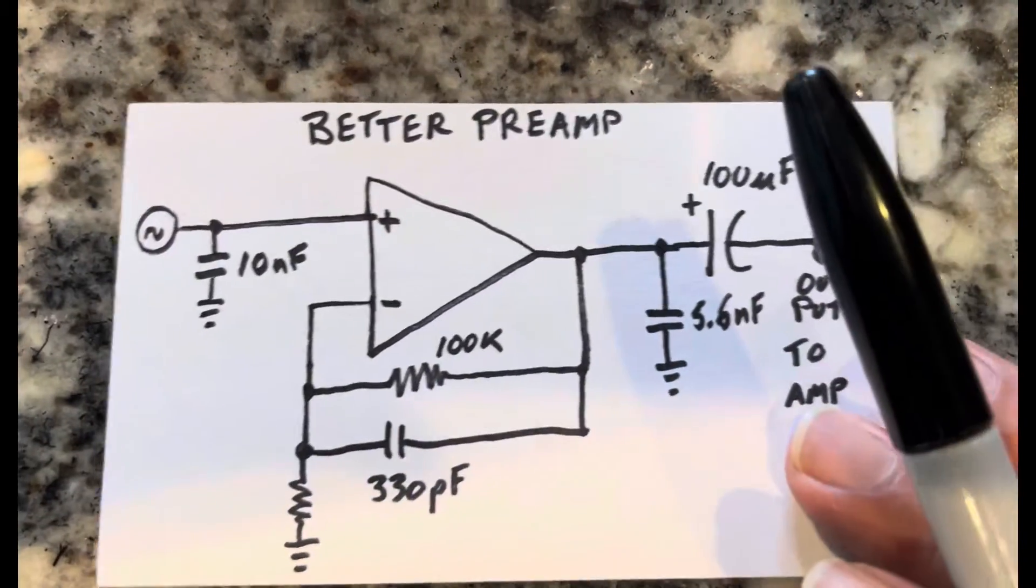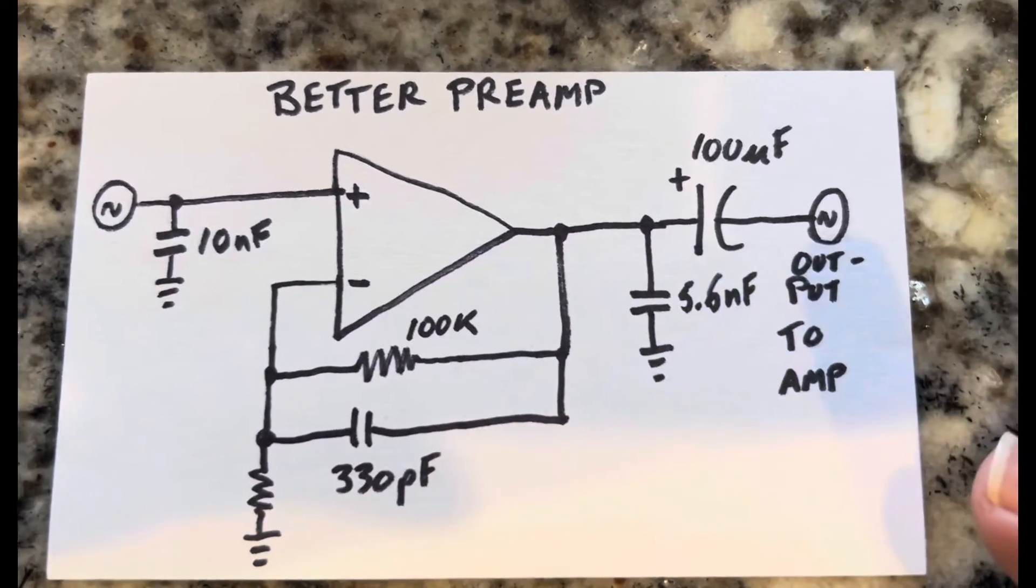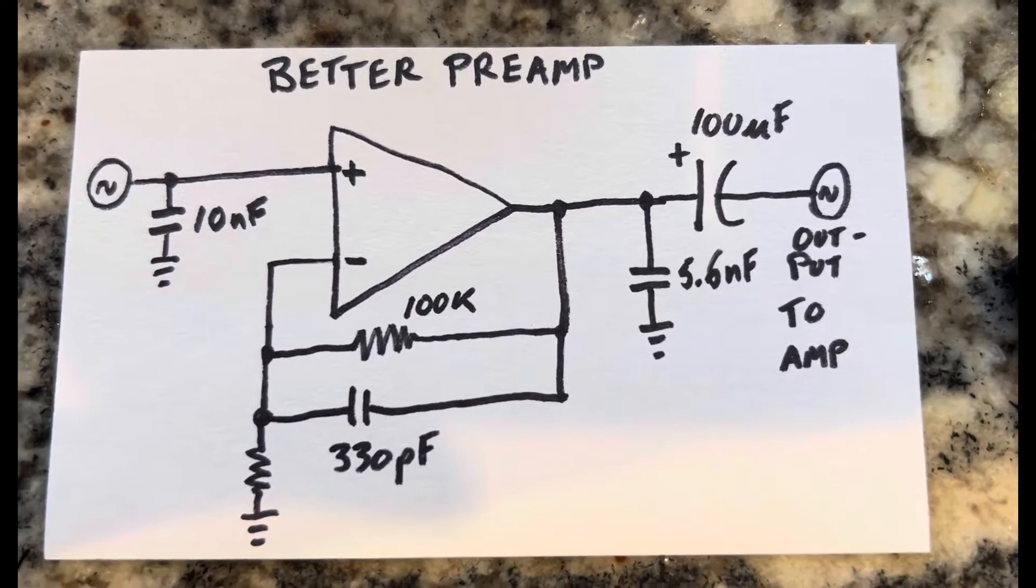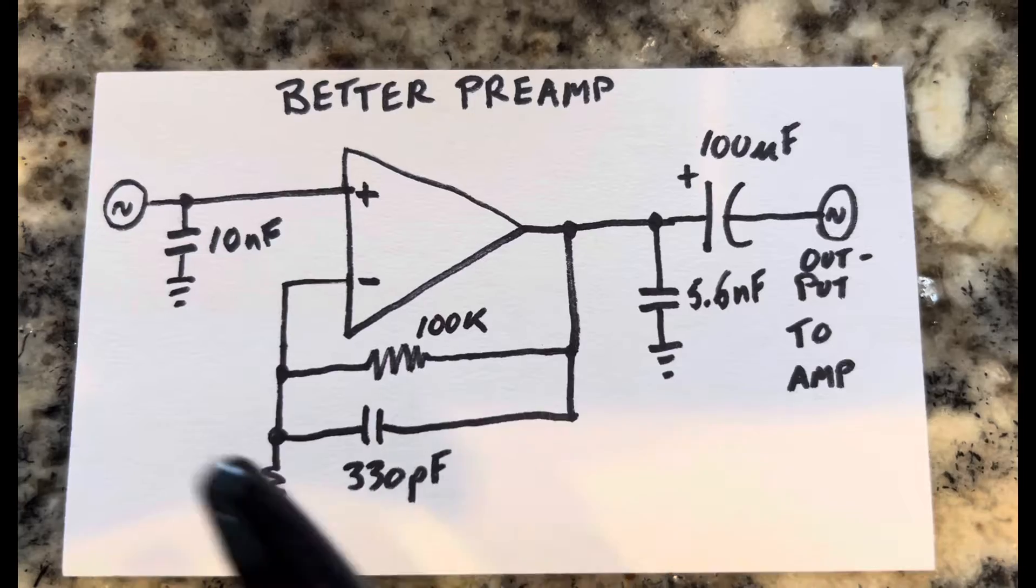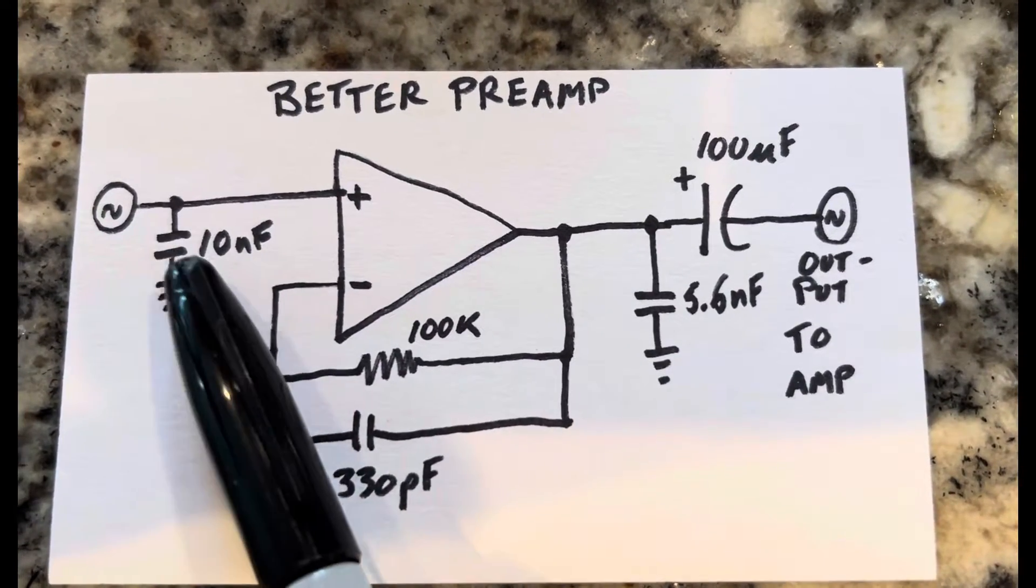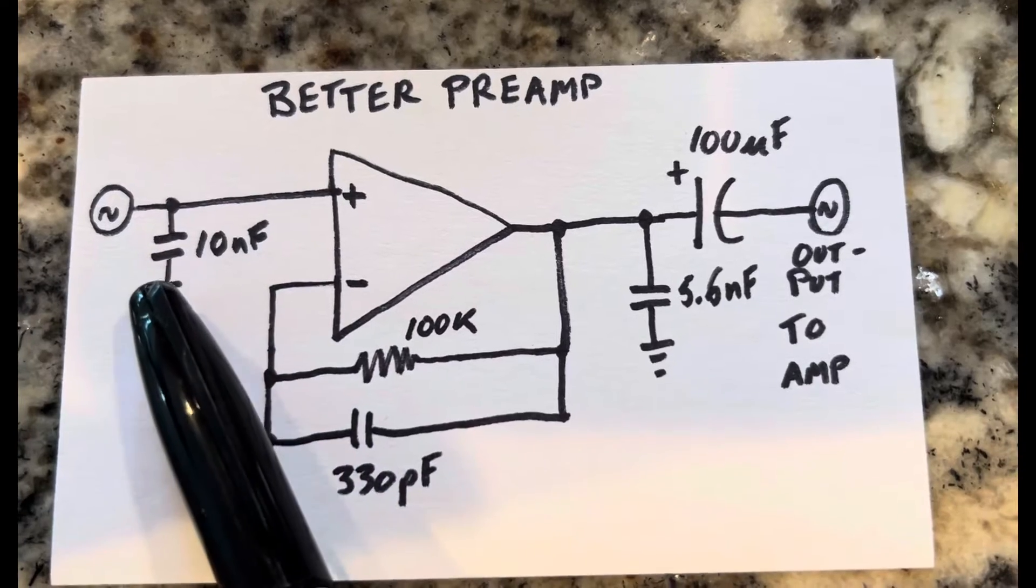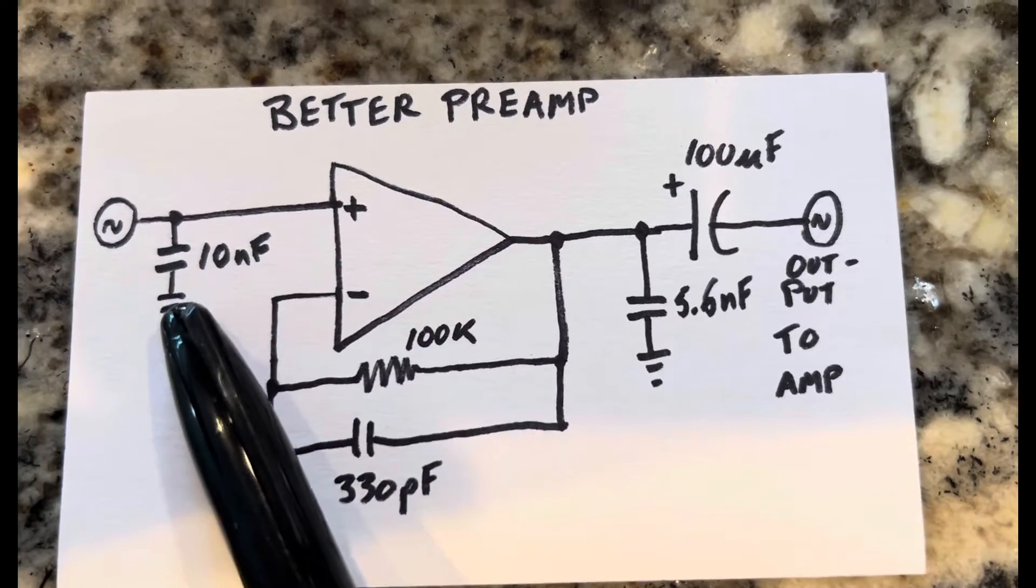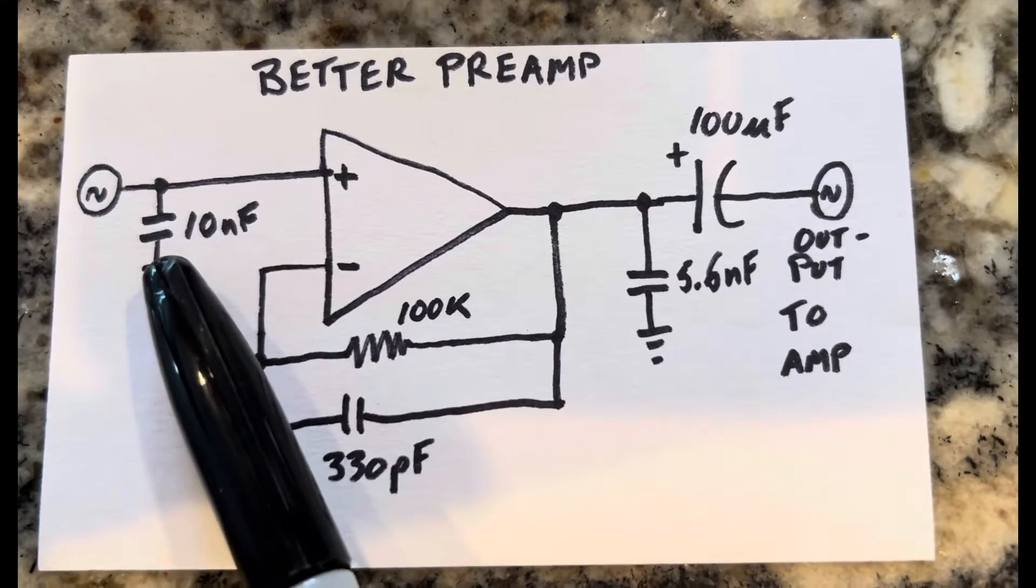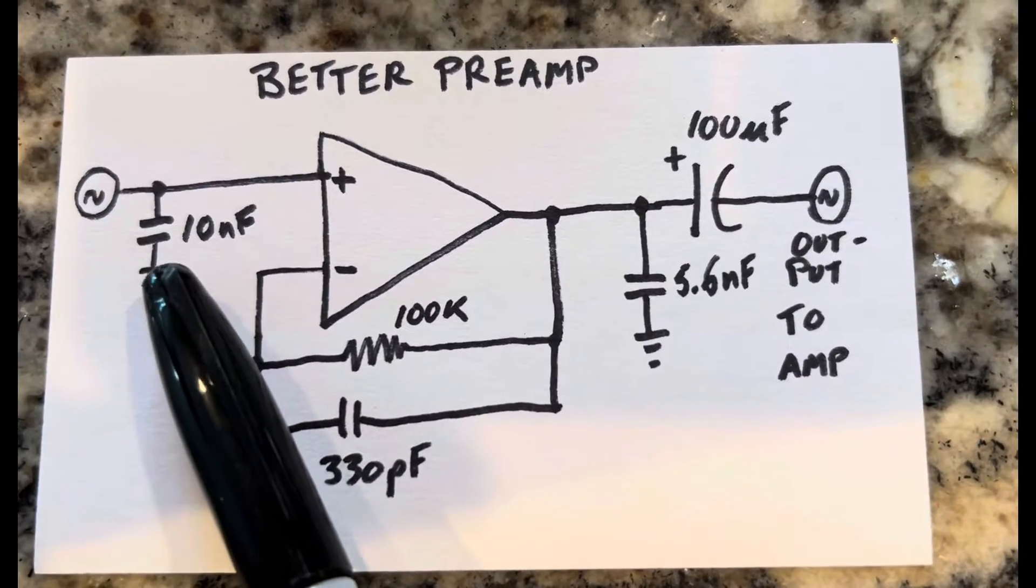But a better preamp is something like this. So to filter out some of this noise, it's the same circuit as before, but I put a 10 nanofarad capacitor to ground from the input signal, which takes away some of that high-frequency noise from the tape head circuit.